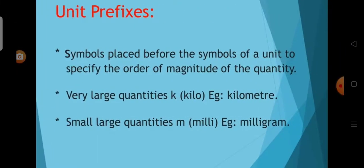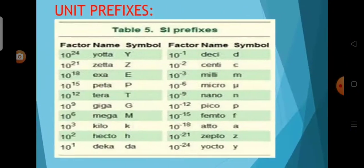Now we see about the unit prefixes. Unit prefixes are the symbols placed before the symbol of a unit, used to specify the order of magnitude of the quantity. They are useful to express very large and very small quantities. For example, kilo is a unit prefix in the unit kilometre. Some unit prefixes: 10²⁴ Yotta, 10²¹ Zetta, 10¹⁸ Exa, 10¹⁵ Peta, 10¹² Tera, 10⁻¹ deci, 10⁻² centi, 10⁻²¹ zepto, 10⁻²⁴ yocto.